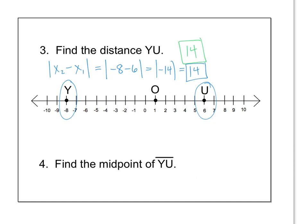Number 4, find the midpoint of y u. So again, you could kind of count your way toward the middle, but on here, it's easier if you just add your two numbers. So x1 plus x2 and then divide by 2. It's like finding an average between the two. So I would take negative 8 plus 6 and divide by 2. Negative 8 plus 6 is negative 2. Negative 2 divided by 2 is negative 1. So negative 1 would be your midpoint.